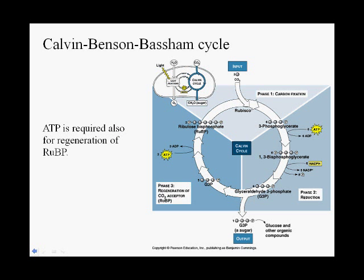Here is the Calvin-Benson-Bassam cycle — those are the three: Calvin and his two colleagues who worked this out. They won the Nobel Prize for this work.